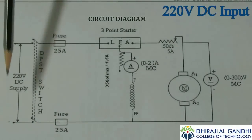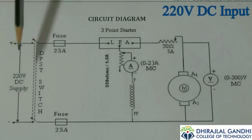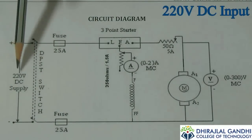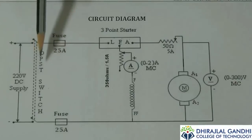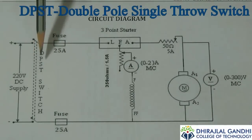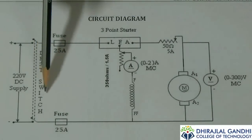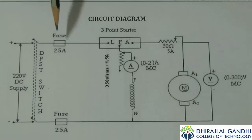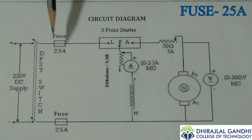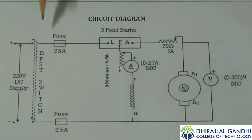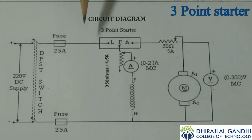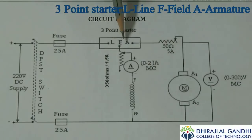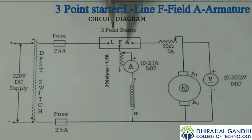Initially, the positive and negative DC supply is selected, which is in the range of 220V supply. Here, we are using a DPST switch — that is, double pole single throw switch. And we are using a fuse arrangement which is of 25 amps. This fuse is used for limiting the starting inrush current. And we are using a three-point starter which has points L, F, A — L for line, F for field, and A for armature points.